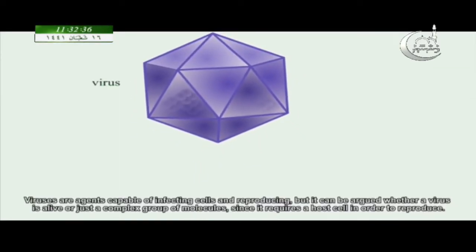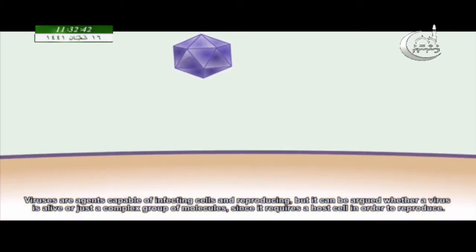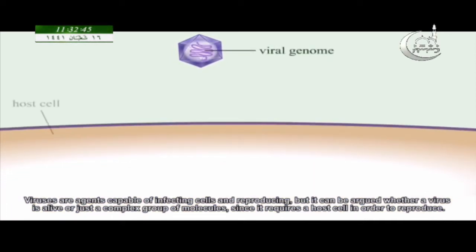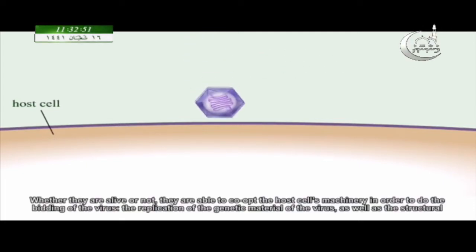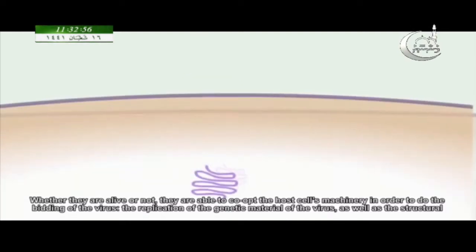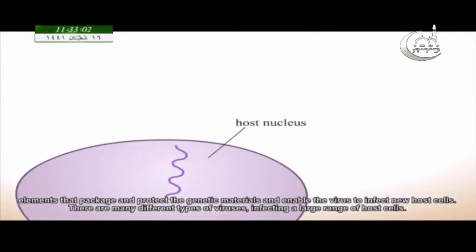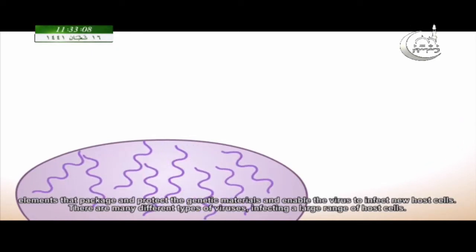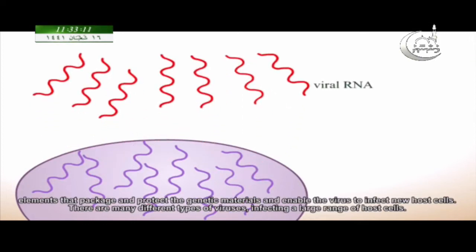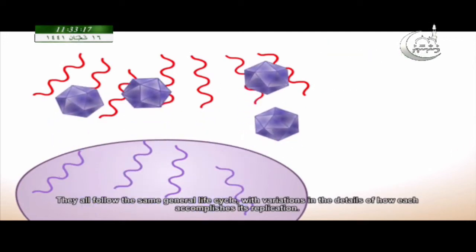Viruses are agents capable of infecting cells and reproducing, but it can be argued whether a virus is alive or just a complex group of molecules, since it requires a host cell in order to reproduce. They are able to co-opt the host cell's machinery to do the bidding of the virus — replicating the genetic material and the structural elements that package and protect it and enable the virus to infect new host cells. There are many different types of viruses infecting a large range of host cells, and they all follow the same general life cycle.